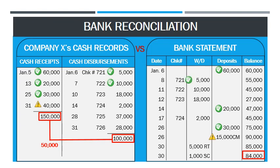There are also items that are in the bank statement that cannot be found in the company's cash records, and these are called the book reconciling items. The book and bank reconciling items are needed in arriving at the adjusted or correct cash balance.